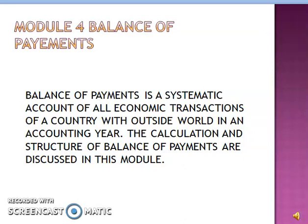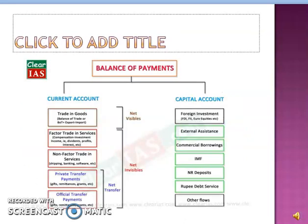The fourth module deals with balance of payments. Balance of payments is a systematic account of all economic transactions of a country with the outside world in an accounting year. The calculation and structure of balance of payments are discussed in this module. The structure of balance of payments has two main accounts: current account and capital account. The current account has two sections — visibles and invisibles trade.